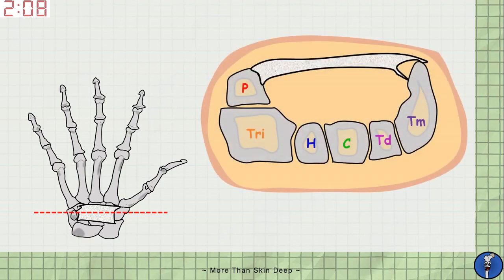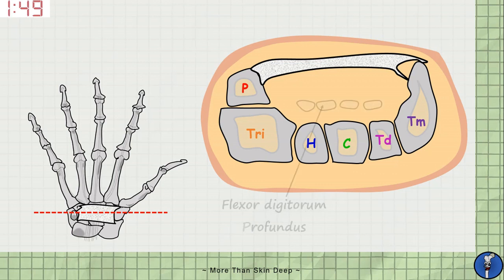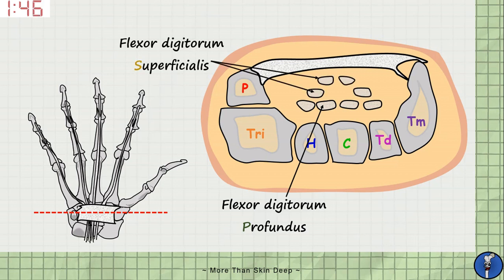Now let's take a cut along the carpal bones at this point. We can see the pisiform, triquetrum, hamate, capitate, trapezoid and trapezium carpals. We can also see the flexor retinaculum spanning the gap between the pisiform and trapezium bones, together forming the osteofibrous walls of the carpal tunnel. Adding in the flexor digitorum profundus and flexor digitorum superficialis tendons, we can see that these enter the hand together and share a common synovial sheath, which lubricates and cushions them to ease movement.